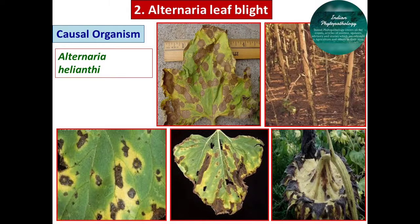Alternaria leaf blight of sunflower is caused by Alternaria helianthi, a fungal pathogen. It is one of the most economically destructive diseases, occurring on all varieties of sunflower in winter season and spreading rapidly during the rainy season. It has been reported to reduce seed yield by 27 to 80% and oil yield by 17 to 35%. This disease also affects the quality of seeds, adversely affecting seed germination and vigor of seedlings.